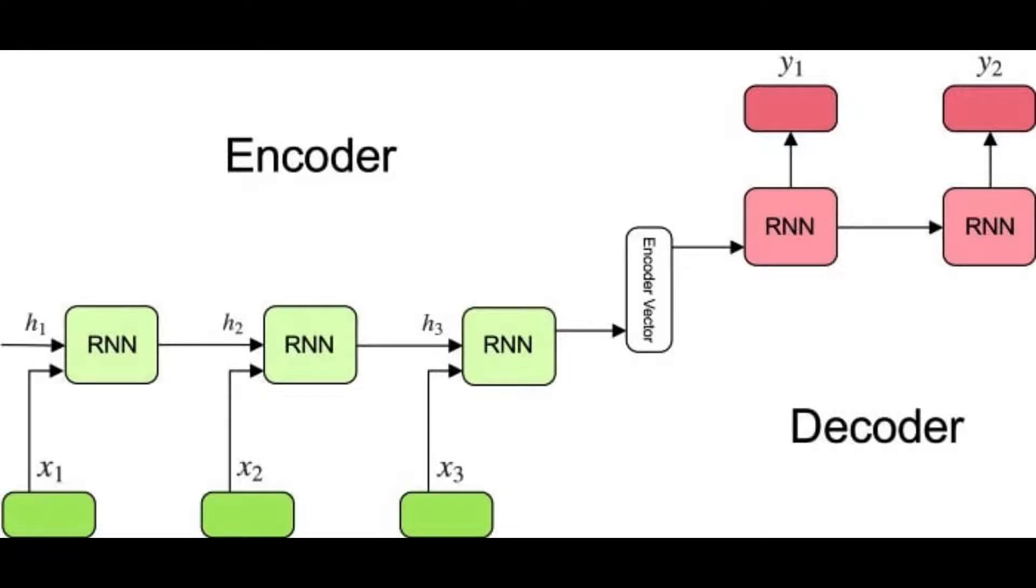This formula signifies the result of a normal recurrent neural network. As we may understand, we just apply the suitable weights to the preceding hidden state H_t-1 and the input vector X_t.